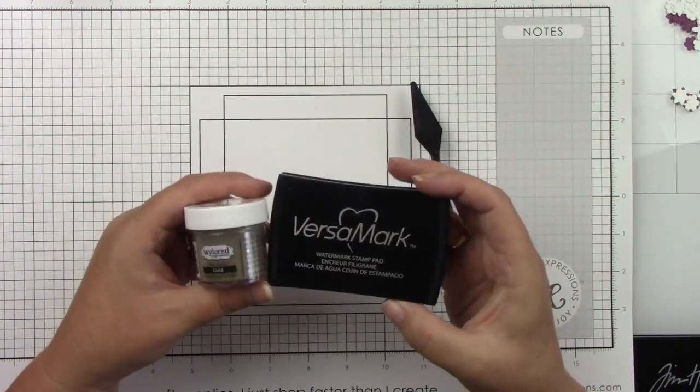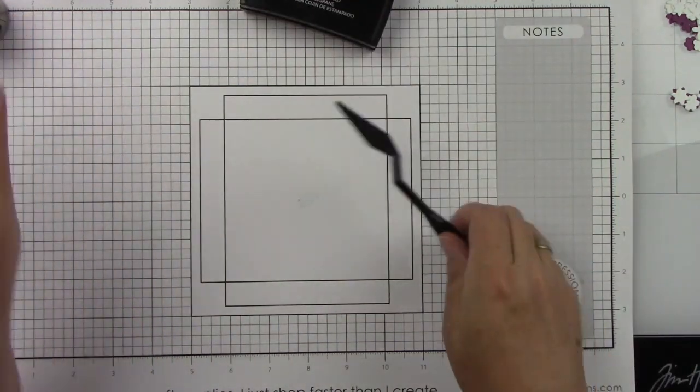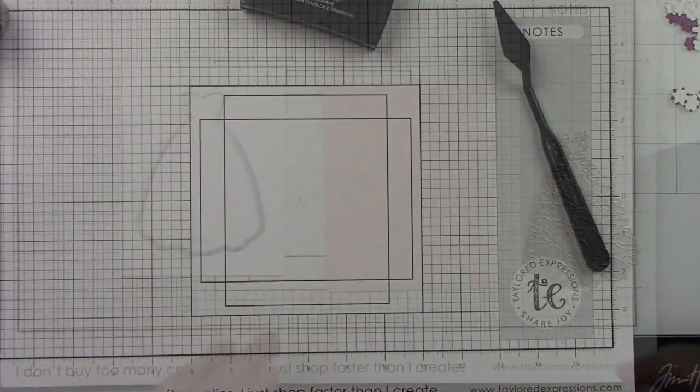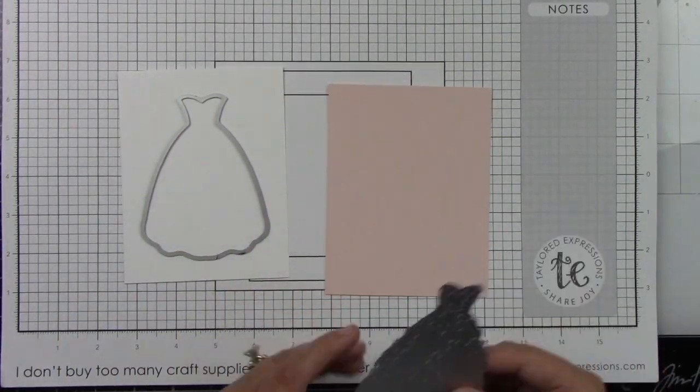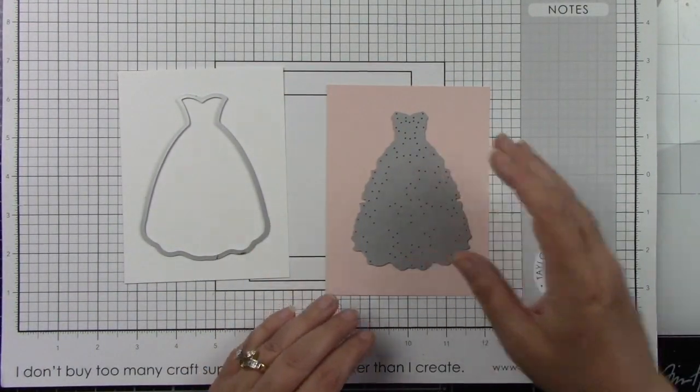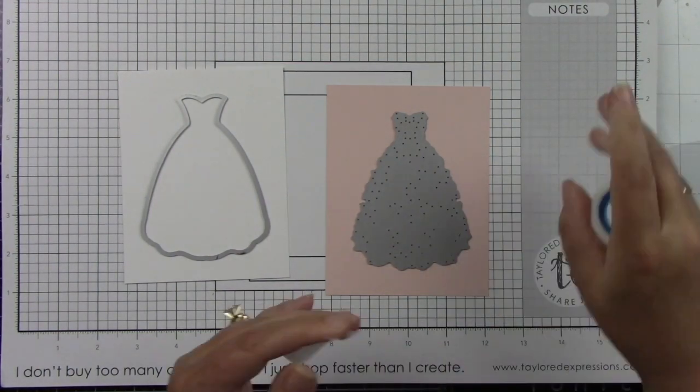Gold embossing powder, Versamark and a palette knife along with glue and my MISTI and my die cutting machine. So here is that die and here is that beautiful brand new Rose Water cardstock along with some Sugar Cube cardstock.